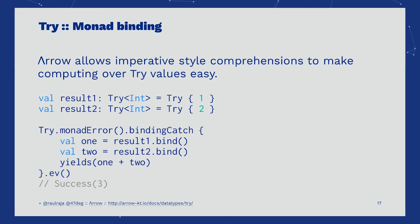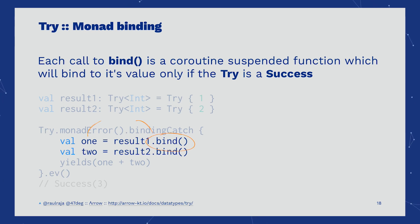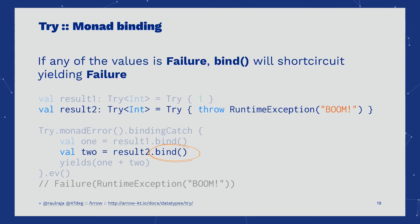Arrow comes with built-in monad comprehensions that allow us to compute over TRY values in an imperative fashion. Each time BIND is invoked, it delegates to FLATMAP and allows a suspension in the coroutine's context to get the value when FLATMAP has completed. If we bind with a failure, the computation short-circuits and a failure is returned instead.